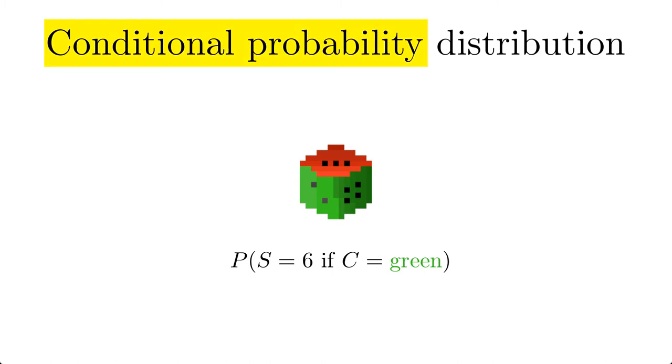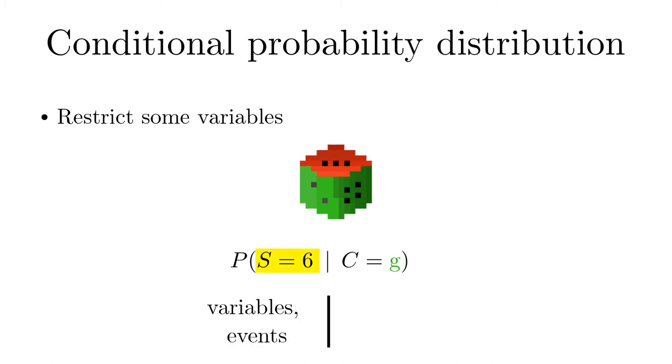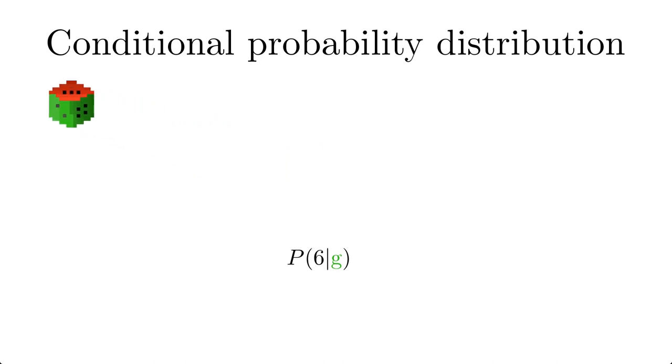Such an object is called conditional probability, since one feature, here the color, is fixed. We use a vertical line to separate the random variables or events of interest from the fixed conditions. In terms of propositions, the notation is shorter. P of a given b describes the probability for a given b is true for sure. When we examine the probabilities for all values of a random variable score, given that the color is green, we obtain the conditional probability distribution.